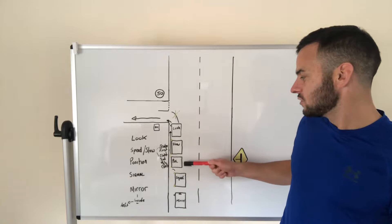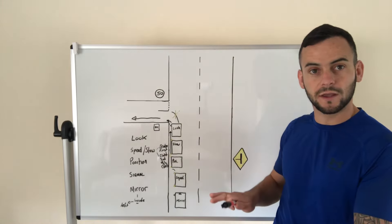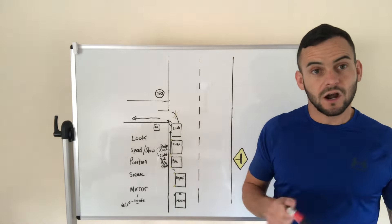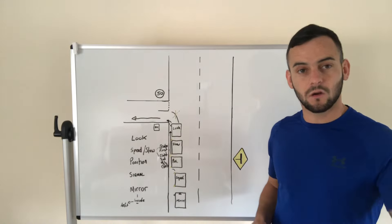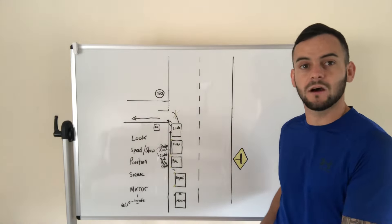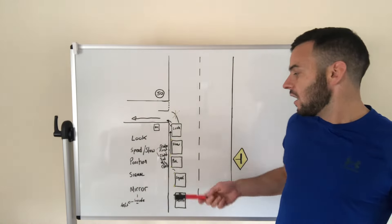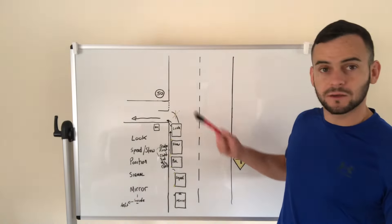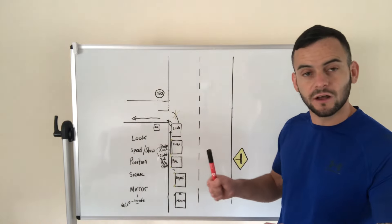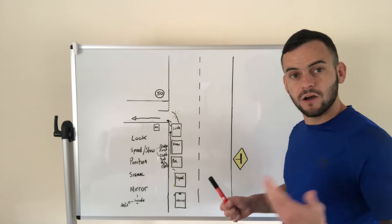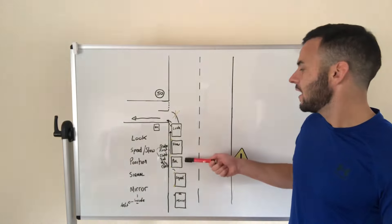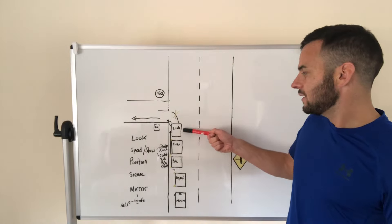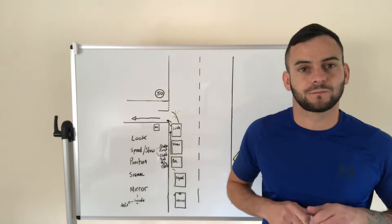Only when you're going slow enough, that's when you clutch in, you come in the second, and very importantly off the clutch. While you're doing that you're still controlling the speed with the brake. So you're in position, you're on the brake, you come in the second, you're off the clutch while you're on the brake, and we're holding it nice and straight.